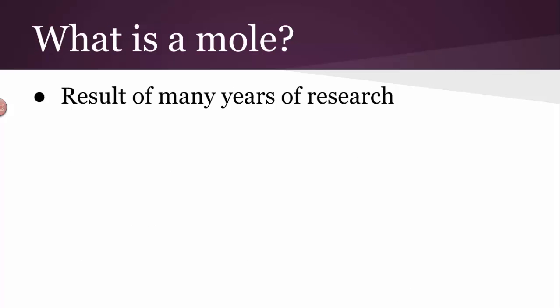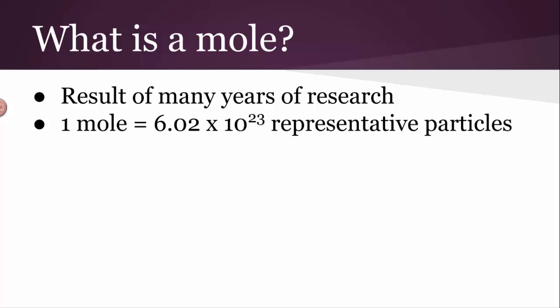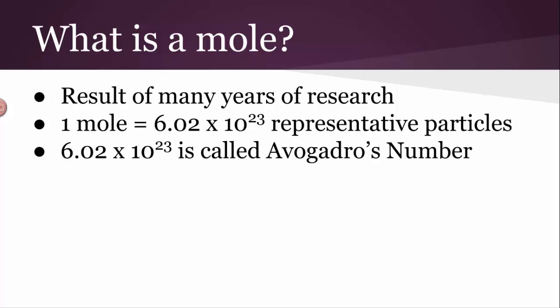After many years of research, including people like John Dalton, who we've heard about, Brazilius, Proust, Boyle, Jacques Charles, we finally came up with a definition for what a mole is. A mole is defined as 6.02 times 10 to the 23rd representative particles. That number, 6.02 times 10 to the 23rd, was named after Avogadro. Avogadro had already been dead. This was the latter half of the 19th century. He had been dead for almost 50 years at that point, but out of respect, they named it after him posthumously.